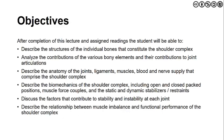The objectives for this anatomy, kinesiology, and biomechanics review are listed here. We'll be looking at the structures of individual bones as well as their contributions to the overall joint articulation. We'll be looking at both static and dynamic joint stabilization structures, as well as the biomechanics of the complex shoulder, including open and closed pack positions and force couples. Additionally, we'll look at the degree of stability versus instability, and wrap up by looking at the relationship between muscle imbalance and functional performance of the shoulder complex.